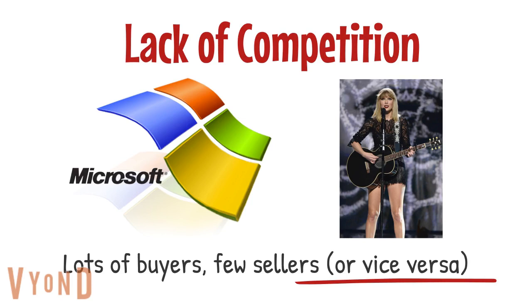Microsoft sells 90% of all operating system software and 95% of all word processing software on the planet Earth. That means the prices they can charge are unusually high because there are lots of buyers and not many choices. As we get more choices — whether it's Google Docs or something else — Microsoft's power over the market is diminished. But clearly, in a world with a lack of competition, they can charge very high prices because we have no choice.